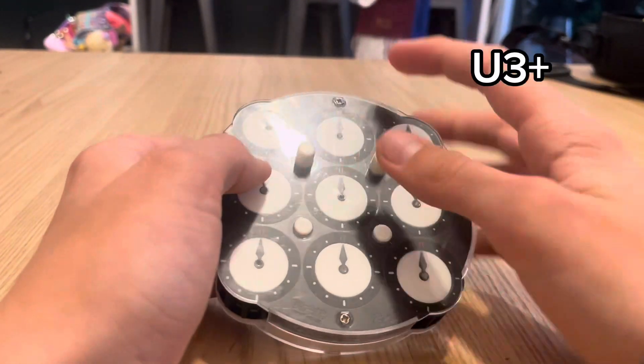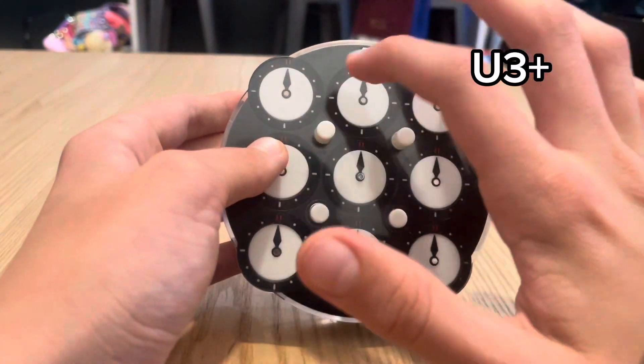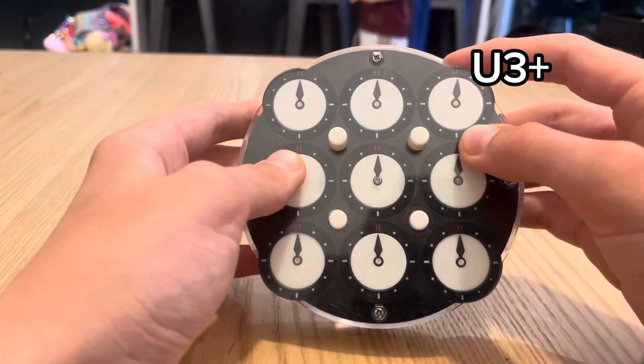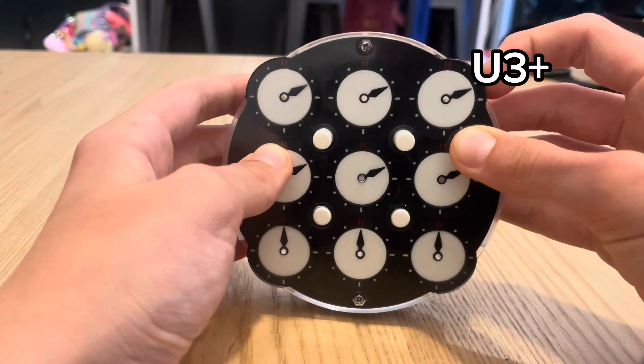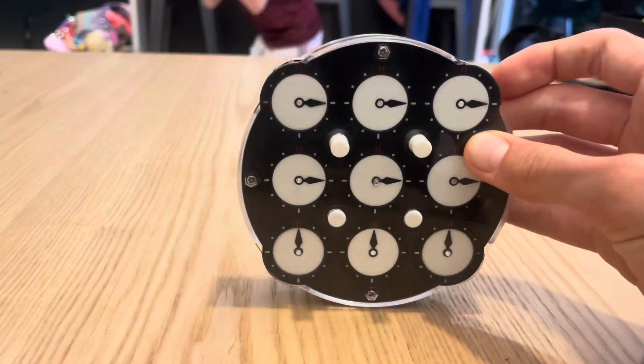But if it said U, let's say U, which doesn't mean a specific corner, and said three plus, you'd move the two dials up and move three clockwise.